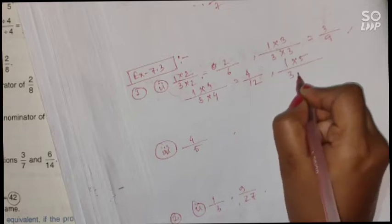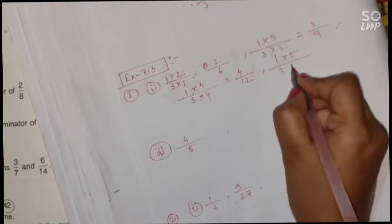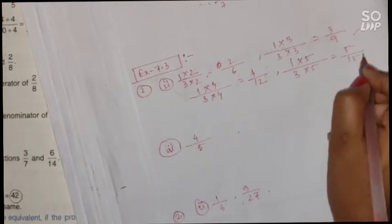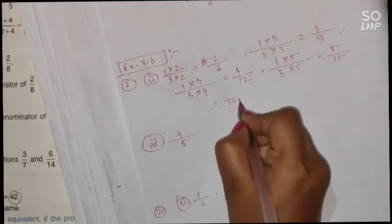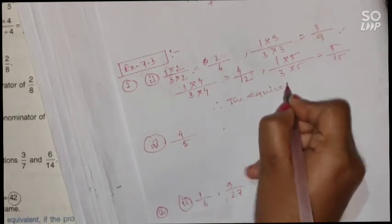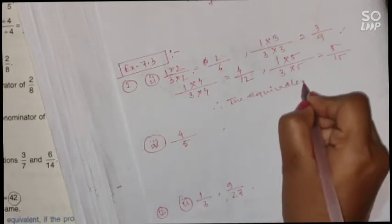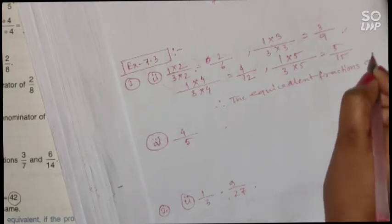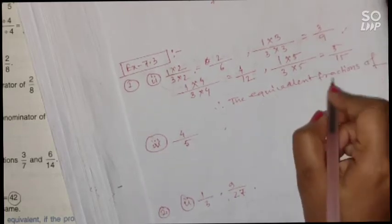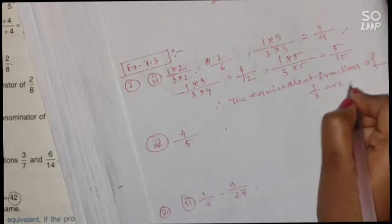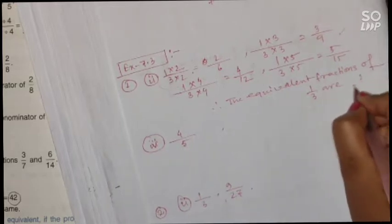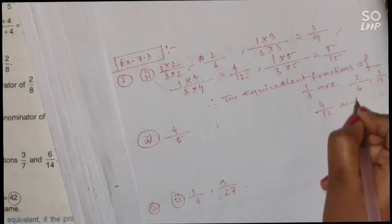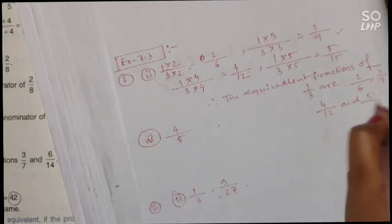Now multiply by 4: 4 times 1 is 4, 4 times 3 is 12 — giving 4 by 12. Now multiply by 5: 5 times 1 is 5, 5 times 3 is 15 — giving 5 by 15. So the four equivalent fractions of 1 by 3 are: 2 by 6, 3 by 9, 4 by 12, and 5 by 15.